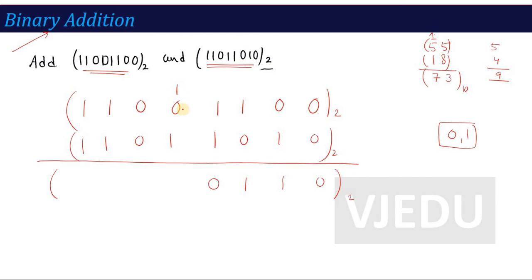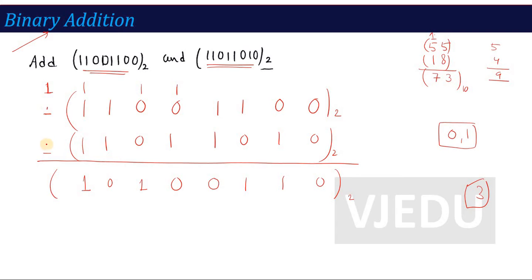Continuing the addition: 1 plus 0 plus 0 is simply 1. Then 1 plus 1 is again 2, so we write 0 and carry 1. Then 1 plus 1 plus 1 becomes 3. Since 3 is bigger than base 2, subtract 2: remainder is 1 and carry 1. The incoming carry then adds to 0 plus 0 giving 1 plus 0 plus 0 equals 1. So the result of the addition of the two binary numbers is 1 1 0 1 0 0 1 1 0.